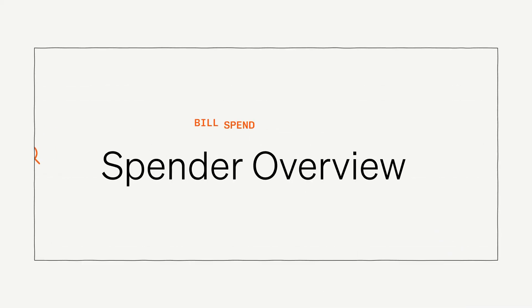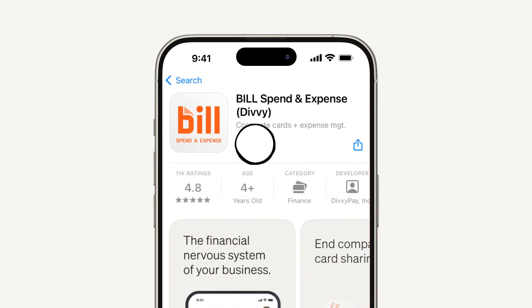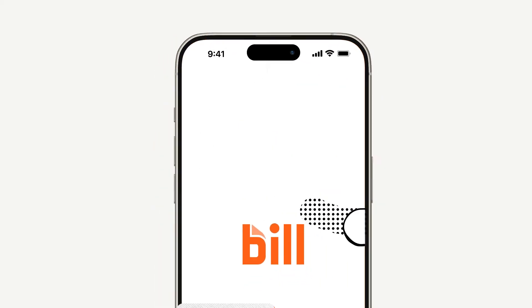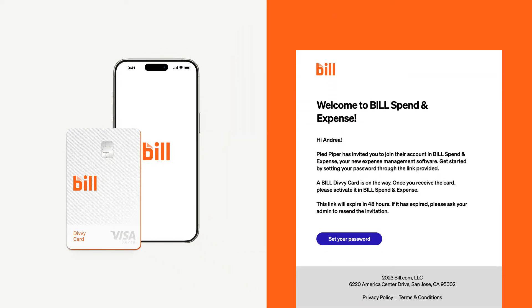In this video, we'll give a quick overview of the Bill Spend and Expense platform for spenders. Your first step should be to download the Bill Spend and Expense mobile app onto your phone. Once your company account has been created, your Bill Spend and Expense admin will send you an email invite to set your password and get signed into your account. It's best to do this sooner rather than later, or at least before the invitation expires.